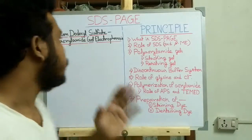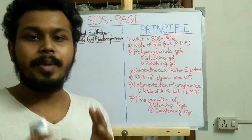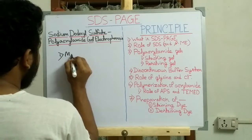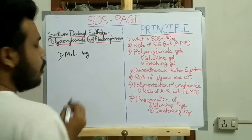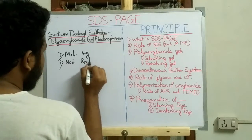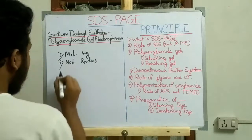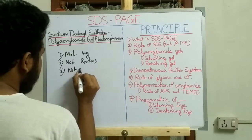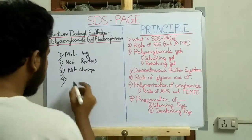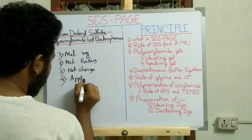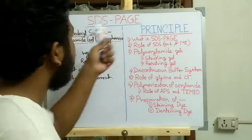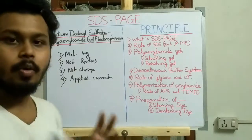The movement of protein on the polyacrylamide gel depends on four factors: one is the molecular weight of the protein, the second is the molecular radius of the protein, the third is the net charge of the protein, and the fourth is the applied current.